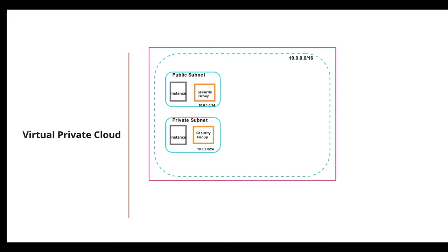Each resource can be secured with a security group. Security groups act as a firewall for instances — you can define which ports you want to allow in, for example SSH, or you can specify which IP ranges are allowed to access instances. You can then add an extra layer of security with network access control lists.